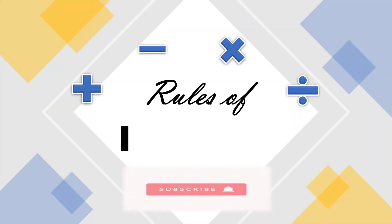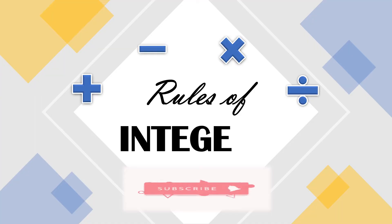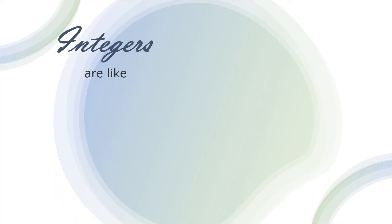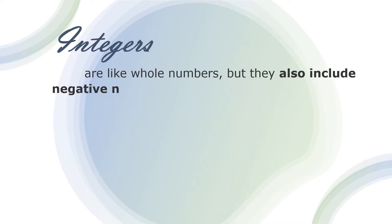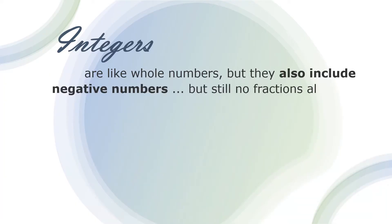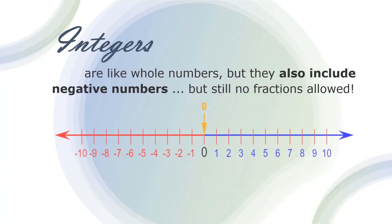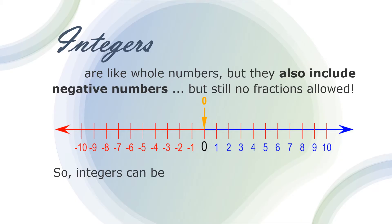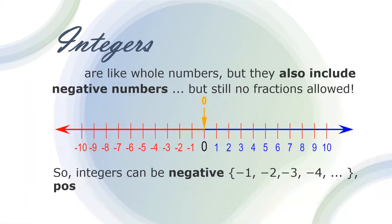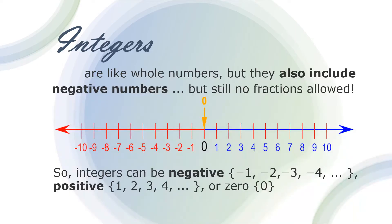Rules of integers. Integers are like whole numbers, but they also include negative numbers — but still no fractions allowed. So integers can be negative, can be positive, or zero.